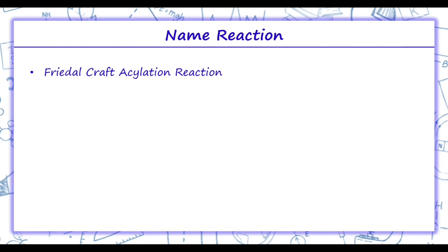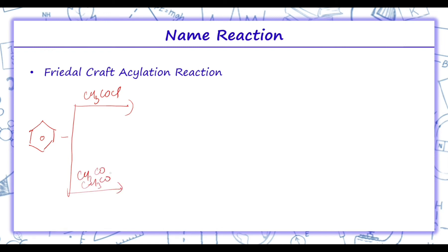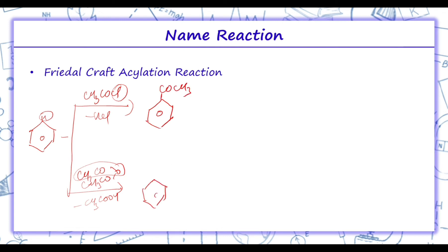Next is Friedel-Crafts acylation. When Friedel-Crafts acylation is performed on benzene, the reaction is performed either with CH3COCl or with acetic anhydride (CH3CO)2O. H and Cl are removed in the first case, and CH3COOH is removed in the second, but the product formed is the same — COCH3, that is acetophenone.